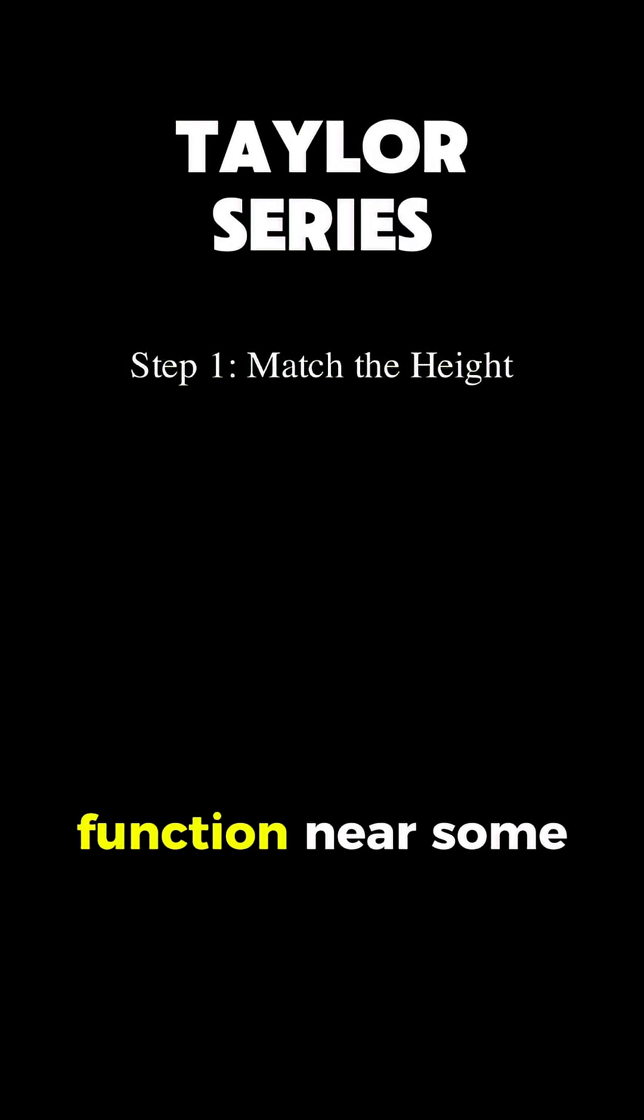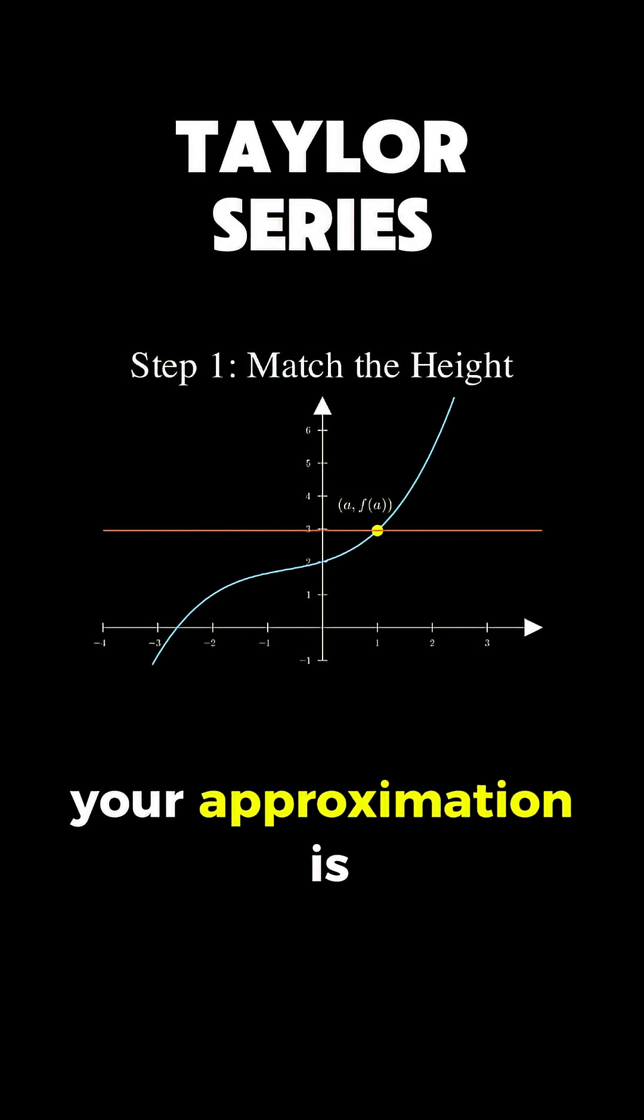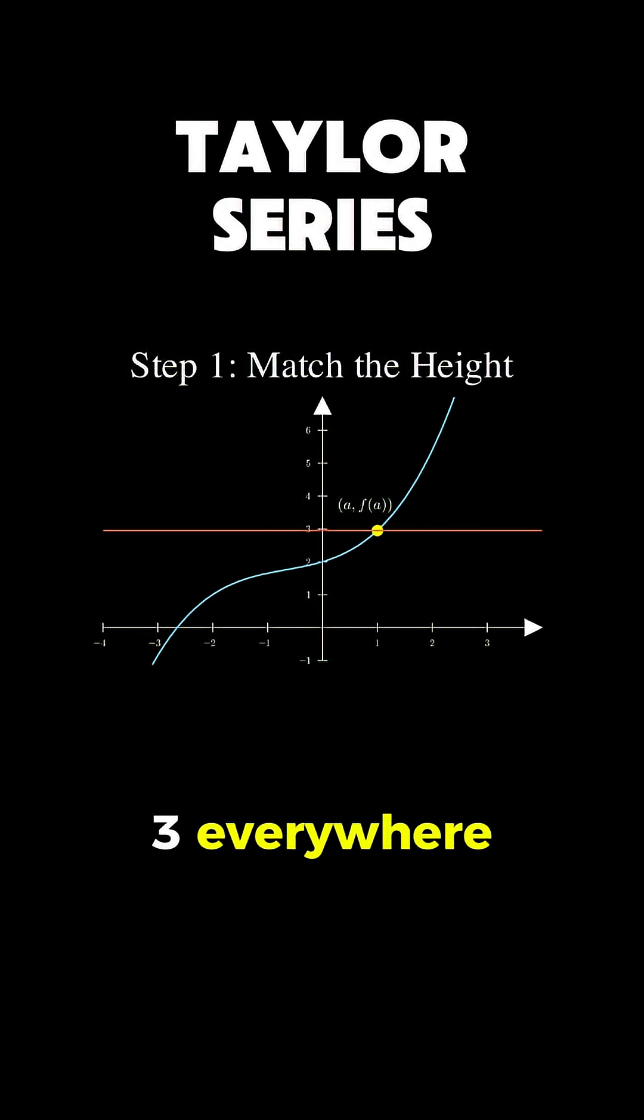When you want to approximate a function near some point, the simplest thing you can do is use a horizontal line that passes through that point. You're matching the function's value. If the function equals 3 at your point, your approximation is just the constant 3 everywhere.